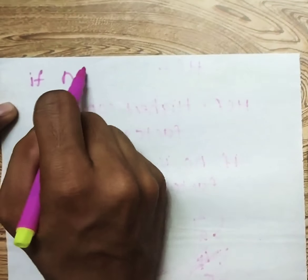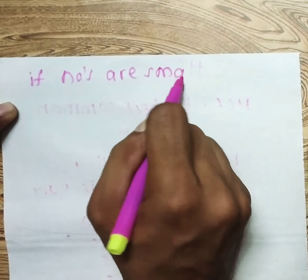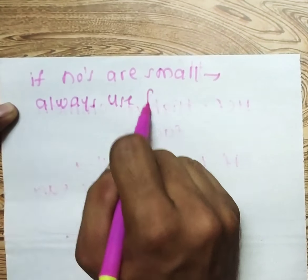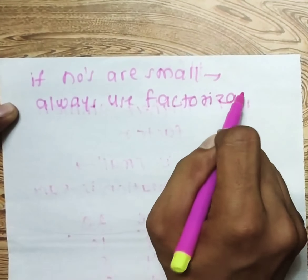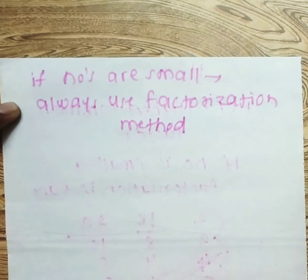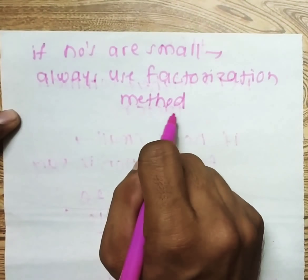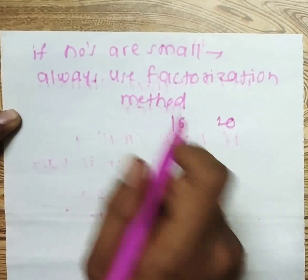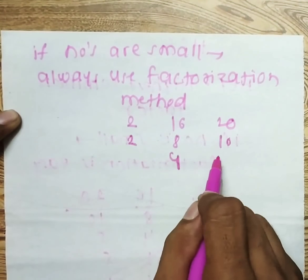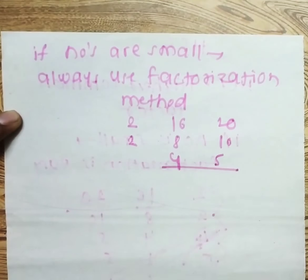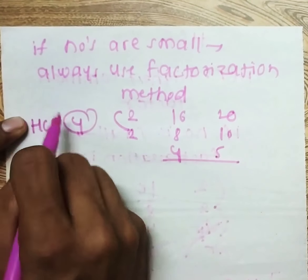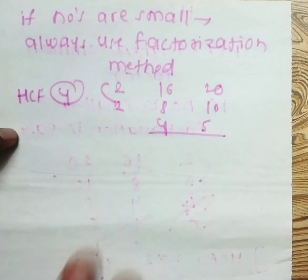To summarize: if numbers are small, always use the factorization method. For example, with 16 and 20, take the common factor 2 — 2 eights are 16, 2 tens are 20, then 2 fours are 8 and 2 fives are 10. There is no common factor between 4 and 5, so HCF = 2 × 2 = 4. This is the factorization method, easy for small numbers.